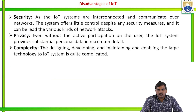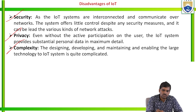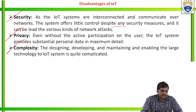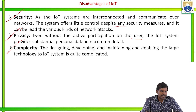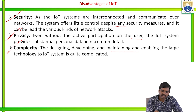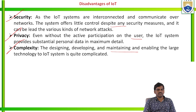Disadvantages of IoT: Security — IoT systems are interconnected and communicate over the network, offering little control despite security measures, which can lead to various kinds of network attacks. Privacy — even with active participation of the user, the IoT system provides substantial personal data in maximum detail. Complexity — designing, developing and maintaining large IoT systems is quite complicated.